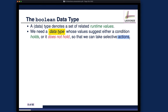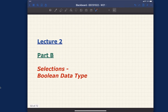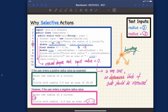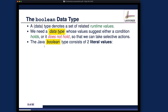So we need a data type whose values suggest either a condition holds or it does not hold — a binary situation — so we can take selective actions, like branching. At this point, if certain condition C holds, I will take this action. If condition C does not hold, I'm going to take this other action. Boolean data type has only two literal values: true and false. True and false are keywords in Java and you have to spell them precisely, otherwise you'll get a compile time error.